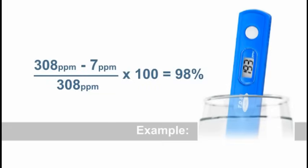Here's an example using the numbers we recorded earlier. We will subtract 7 from 308 and divide it by 308, then multiply by 100 to get the percentage. This gives us a 98% rejection rate on our reverse osmosis system.